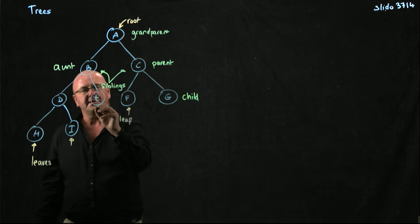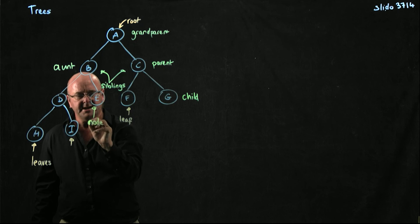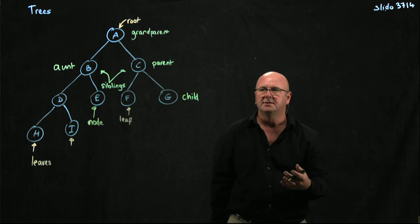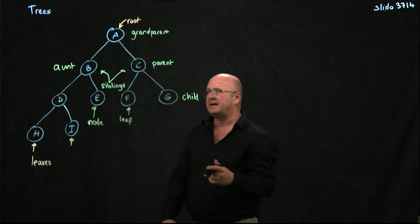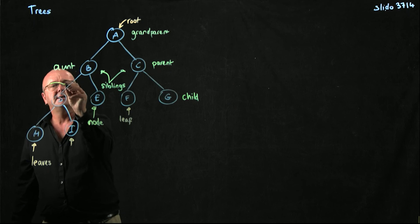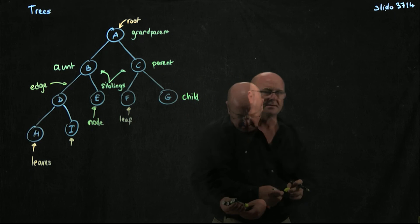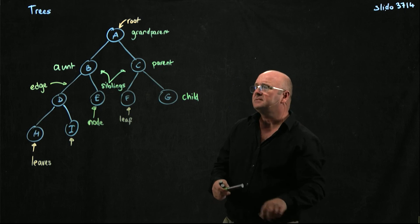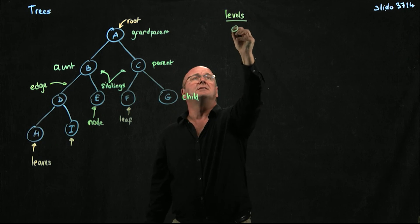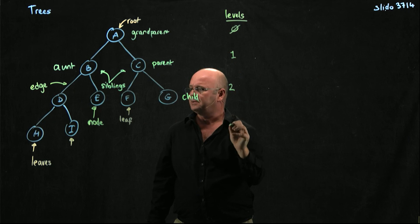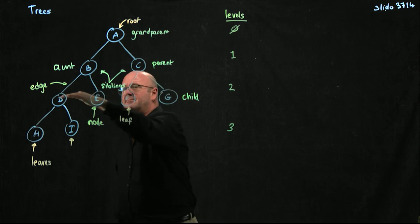Each thing in our tree, each item in our tree, is a node. We're going to build off the same analogy we've used in linked lists and hashes with nodes. And then we have an edge — an edge joins two nodes together. We can also talk about levels of the tree: this is level 0, level 1, level 2, level 3.